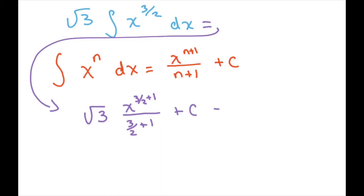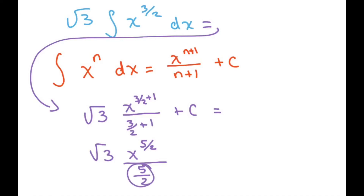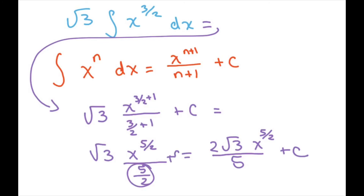And that's going to give you square root of 3 times x to the 5 halves divided by 5 over 2. Flipping this around, you're just going to put 2 here, so this equals 2 square root of 3 over 5 times x to the 5 halves, plus c.